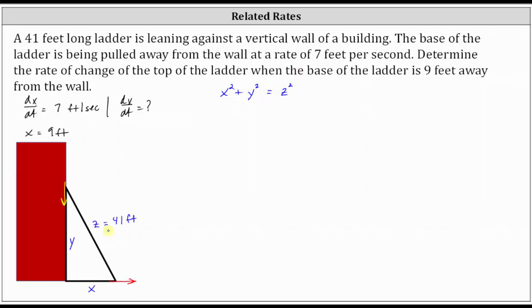But we also know Z never changes, and therefore we can substitute 41 for Z. This gives us the equation X squared plus Y squared equals the square of 41.